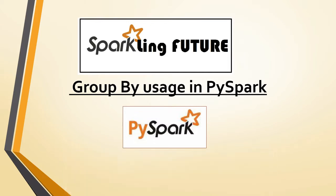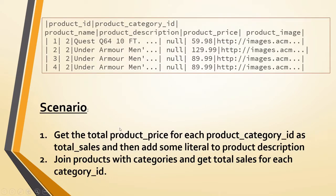Today we will see the scenario. Let's say we have a product table which has product ID, product category ID, product name, product description, product price, and product image — some columns. The scenario will be to get the total product price for each product category ID.